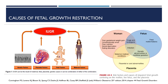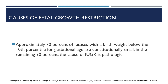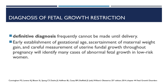What are the causes of fetal growth restriction? Risk factors for impaired fetal growth include potential abnormalities in the mother, fetus, and placenta. Approximately 70% of fetuses with a birth weight below the 10th percentile for gestational age are constitutionally small, meaning the parents are genetically small and the fetus follows suit. In the remaining 30%, the cause of IUGR is pathologic. Definitive diagnosis frequently cannot be made until delivery. Early establishment of gestational age, ascertainment of maternal weight gain, and careful measurement of uterine fundal growth throughout pregnancy will identify many cases of abnormal fetal growth in low-risk women.